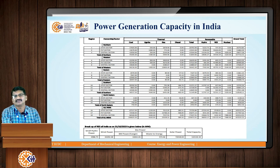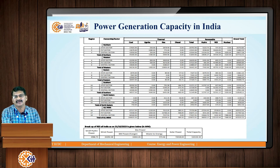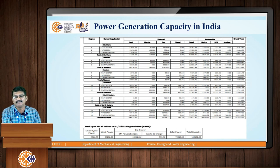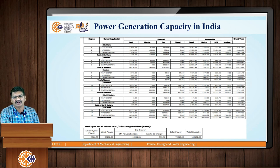Then there are nuclear power plants, hydel power plants and renewable energy sources. I have taken this data from the Central Electricity Authority (CEA) website — the total generation capacity up to last month. The major total capacity is 4,25,000 megawatts — that is the total generation capacity in our country.